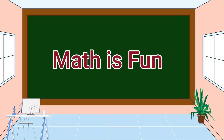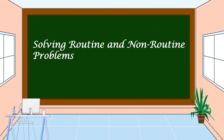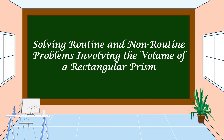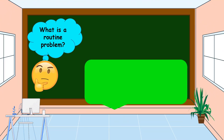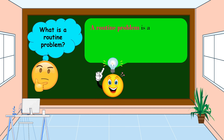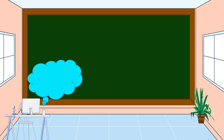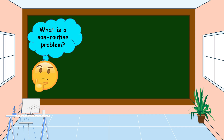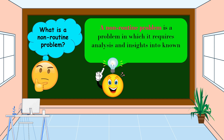Hello everyone, welcome to Math is Fun. Our lesson for today is all about solving routine and non-routine problems involving the volume of a rectangular prism. A routine problem is a translation problem in which you can write an equation as there is an immediate solution. A non-routine problem is a problem in which it requires analysis and insights into known principles of mathematics.